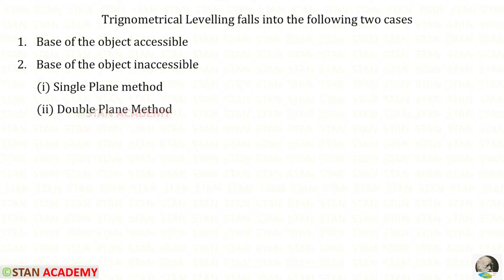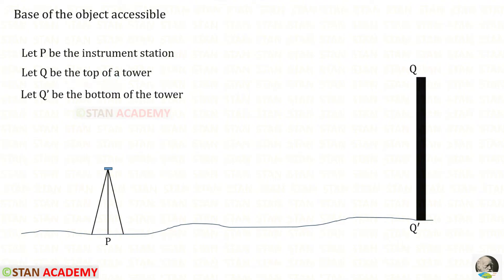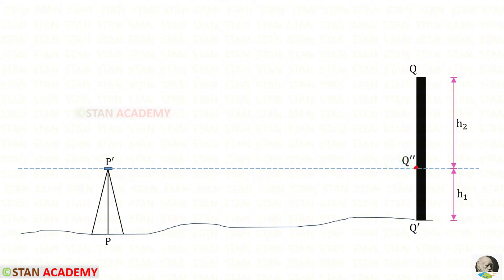In today's lecture, we are going to only see base of the object accessible. Base of the object accessible means that from the instrument station, the base of the object is accessible and we can go there and take the measurements. Let us keep this object as a tower — q is the top of the tower, q dash is the bottom, and P is the instrument station. We make a horizontal projection from the center of the theodolite, keeping this point as q double dash.